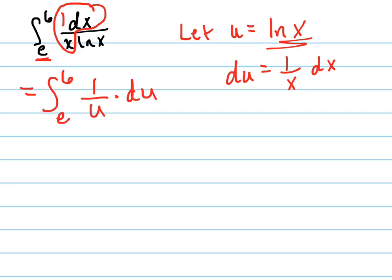In red is my du, and I'll change this to green. That is right there in the denominator, so that's why I wrote it as 1 over u. Now I can take the integral of this. So from e to 6, that's going to be like u — it equals the integral of u to the negative 1 du.